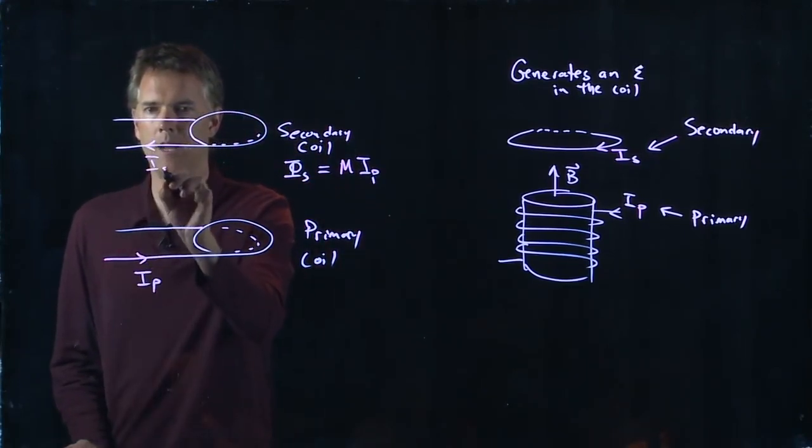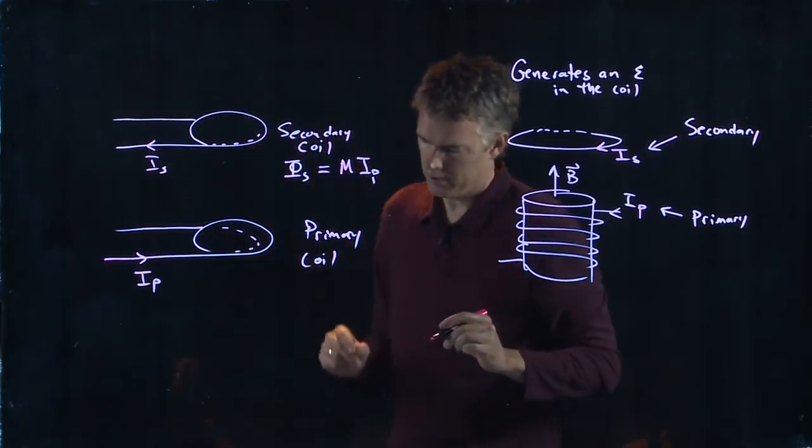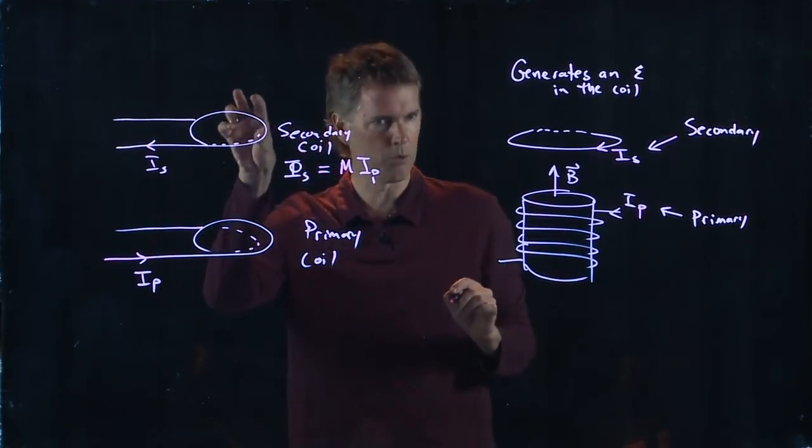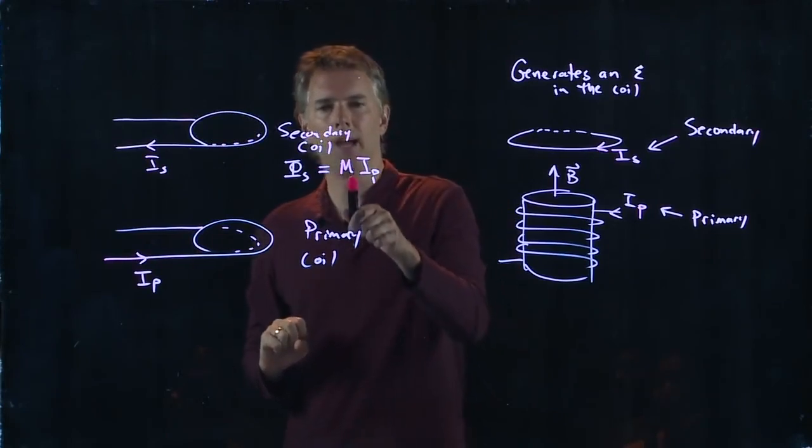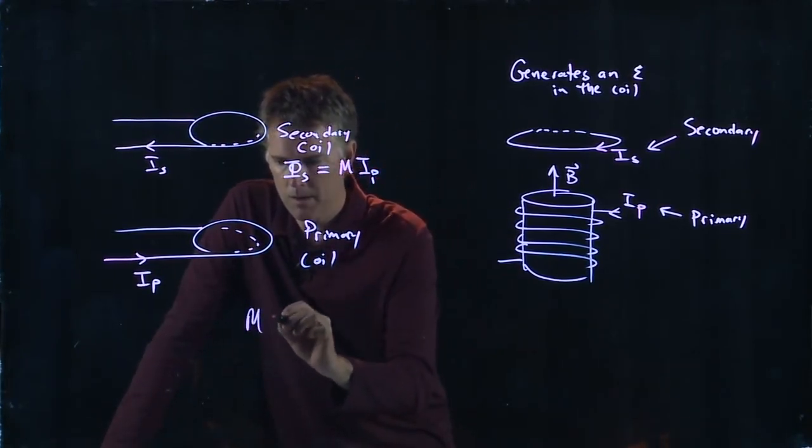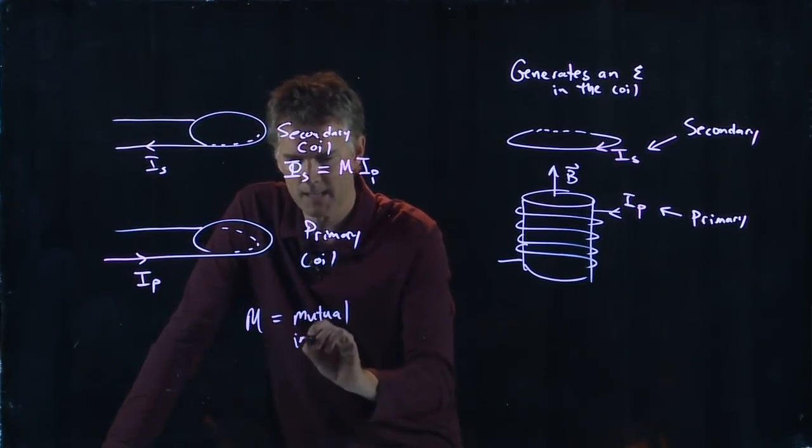There's some current I_S which develops in the top one. How much current depends how much current in the bottom one dictates how much magnetic field is going to go through the top one. And so you get this factor M in there where M is something called the mutual inductance.